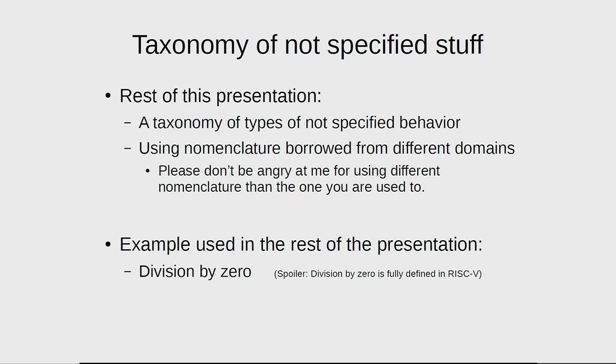The rest of this presentation is a taxonomy of possible ways of not specifying things. Right now in RISC-V we don't really have a nomenclature for that, so I picked the nomenclature from different sources. If I say a term means something and you've heard it before with a different meaning, that's because we come from different fields — and that's the whole point. We have to find our own nomenclature for this.